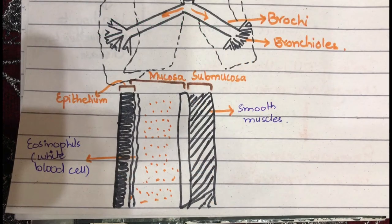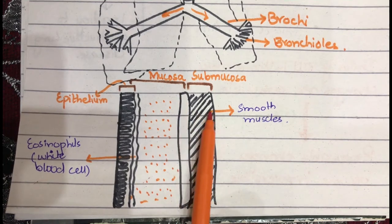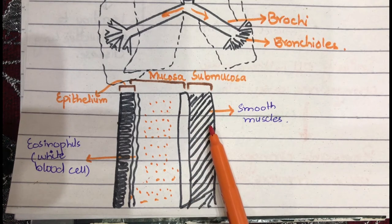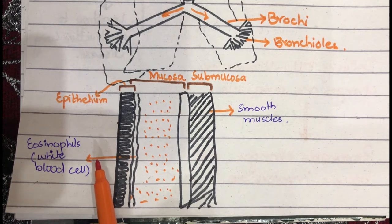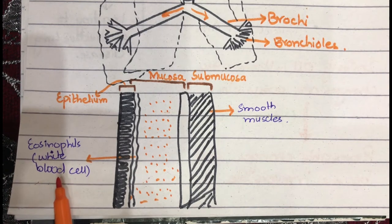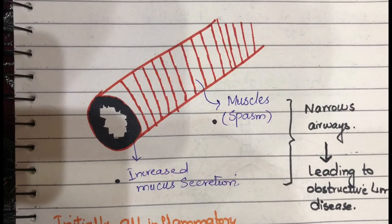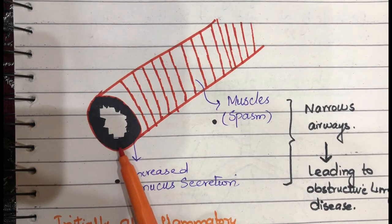If we elaborate a little on the structure inside the lung, the bronchioles have layers: on the main surface there is epithelium, after epithelium we have mucosa, after mucosa there is sub-mucosa. Inside the sub-mucosa, the important structure to remember is that there are muscles — smooth muscles.